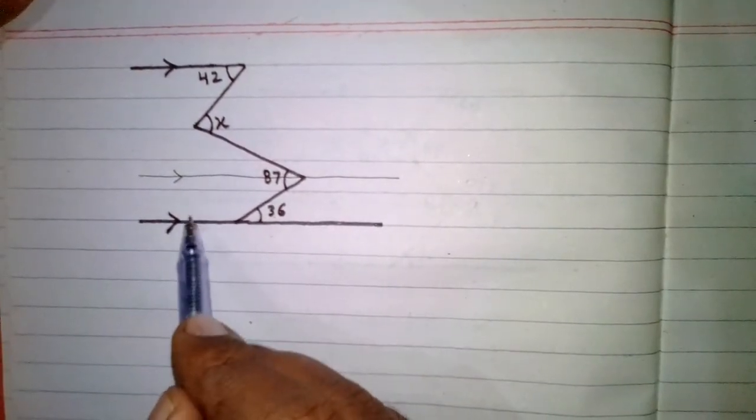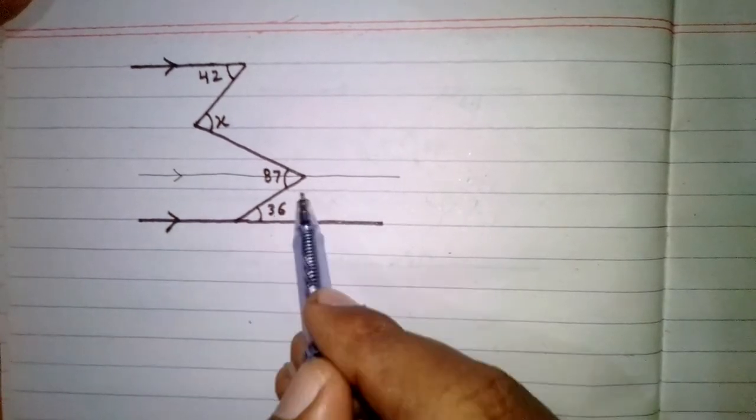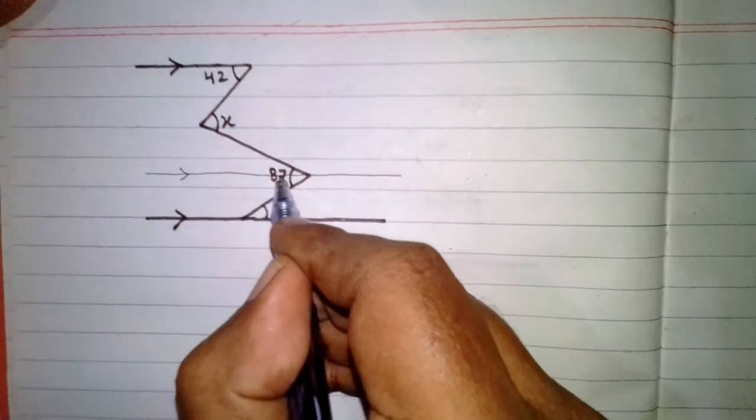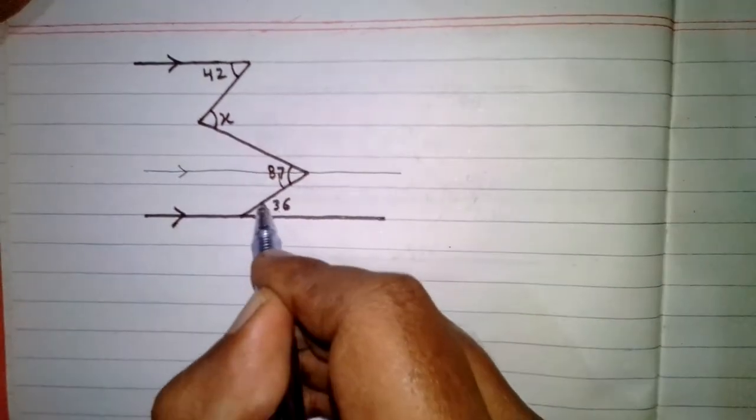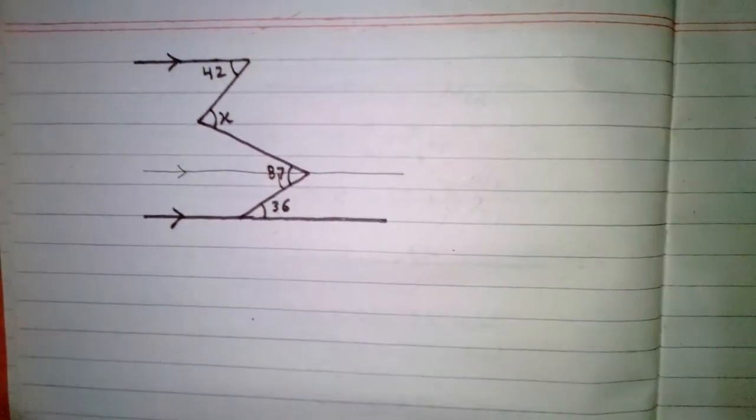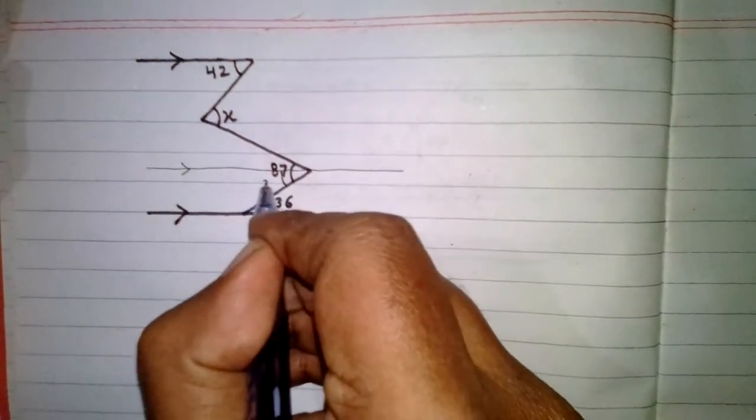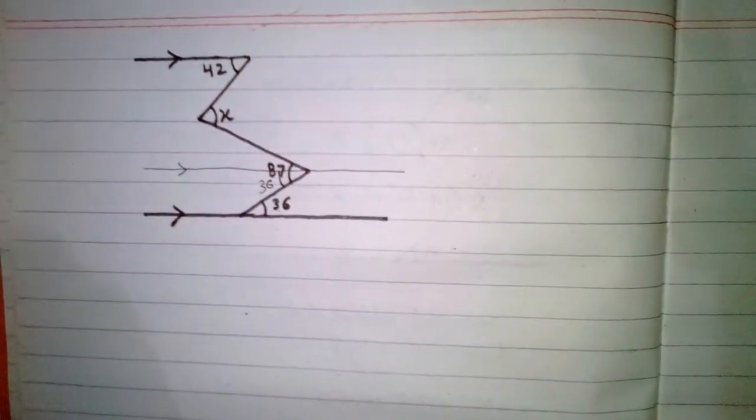This line and this line are parallel lines and they are cut by a transversal, so this angle and this angle are alternate angles and they are equal. So this angle is 36.